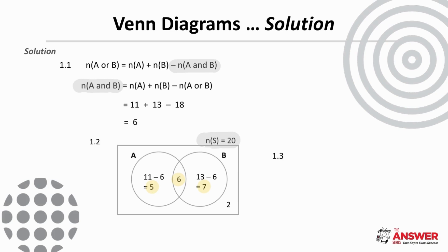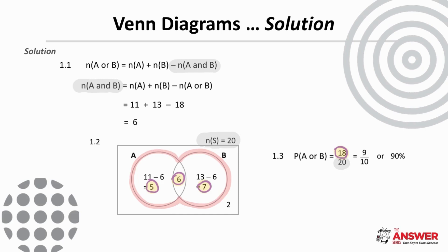For 1.3, the probability of an element being randomly selected from A or B — we add these elements together, divide by the total number of elements in the sample set, and see that the probability is 9 over 10 or 90 percent.